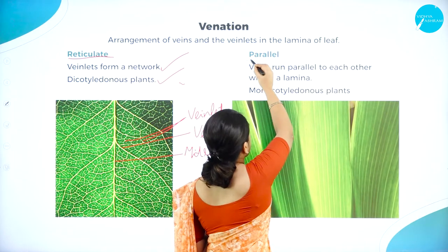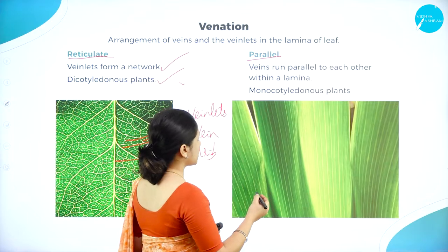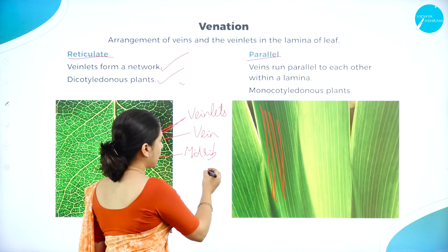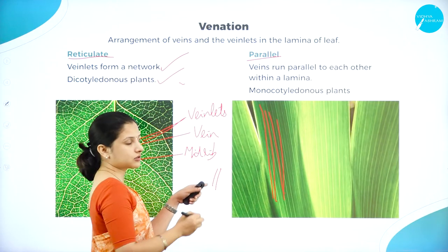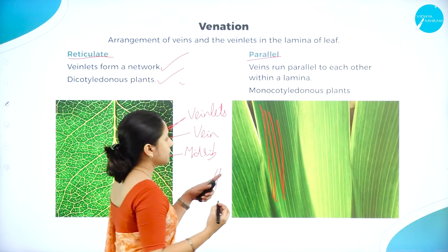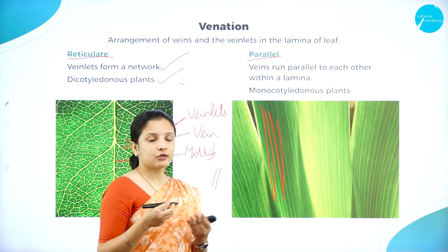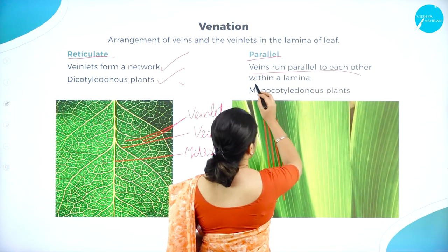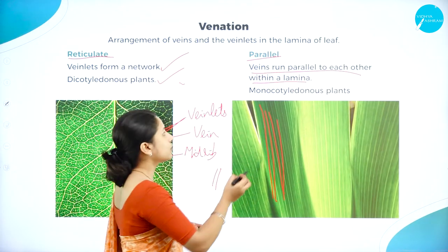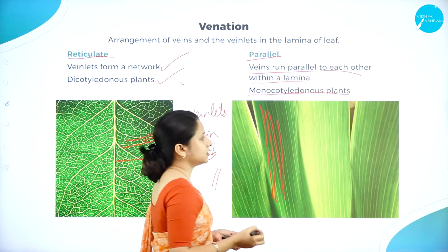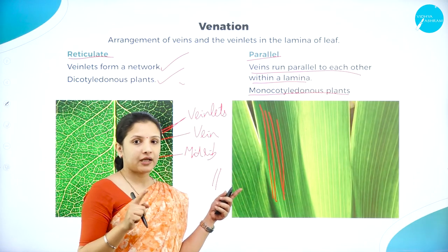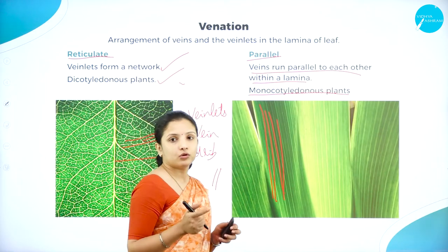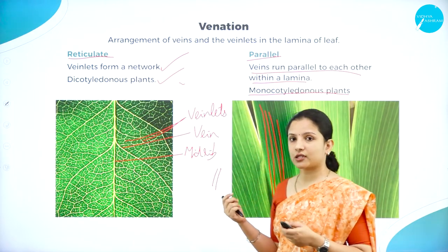Next is parallel venation. Here the veins run parallel to each other within the lamina — there is no network of veins, just the main veins running in parallel. These are usually seen in monocotyledonous plants. So those plants having a fibrous root system and parallel veins in the leaves can be placed under monocotyledons. This is how classification can be done based on the veins.